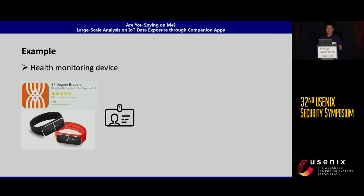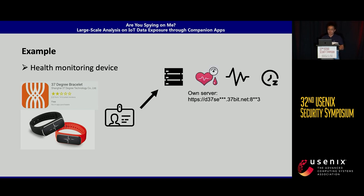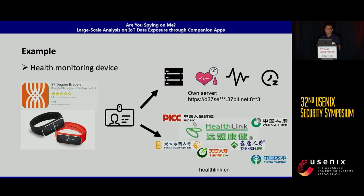Here is one example showing what kind of IoT devices are collecting data and what the impact is. The device is a smart bracelet. We found that this smart bracelet collects users' health data and sends it to the company's own private server. At the same time, we found that it also shares part of the data to a network of insurance companies. This is a clear indication of a potential privacy violation, as they are sharing users' data to a network without disclosing this to the user.